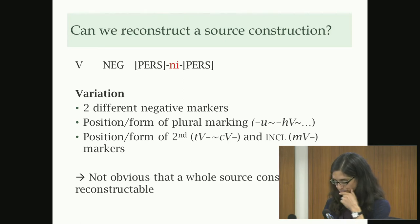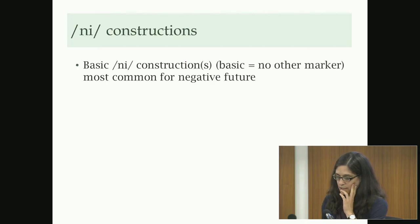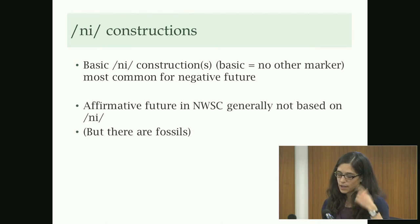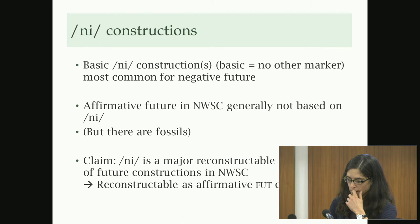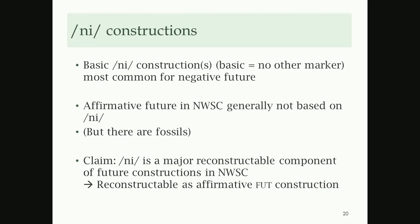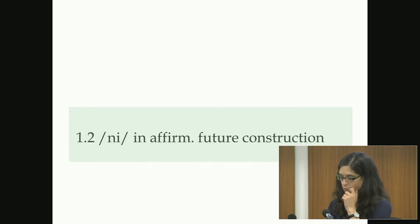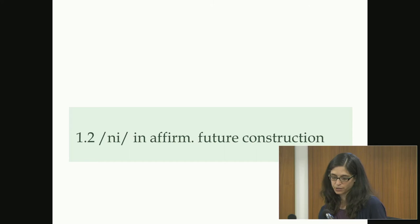The basic knee construction — meaning no other marker other than knee — is the most common negative future structure. Affirmative future constructions generally are not based on knee, though there are fossils. Taking data from Monsang, knee actually is a major future construction that used to exist for both negative and affirmative contexts, and we can demonstrate this based on internal reconstruction within Monsang.